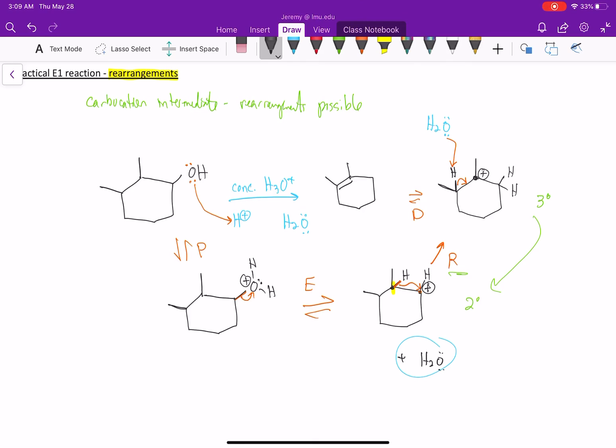Forming a tetrasubstituted alkene. And that is the major product formed via a practical E1 reaction with a rearrangement.